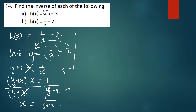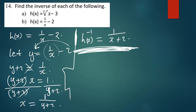After dividing, y plus two cancels on the left, leaving just x. So x is therefore equal to one over y plus two. We can now write the final solution: h inverse of x is therefore equal to one over x plus two, replacing y with x.